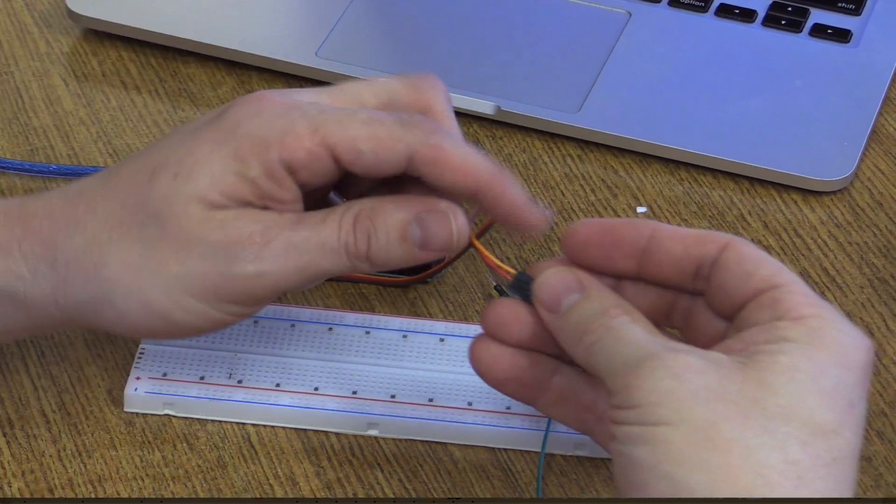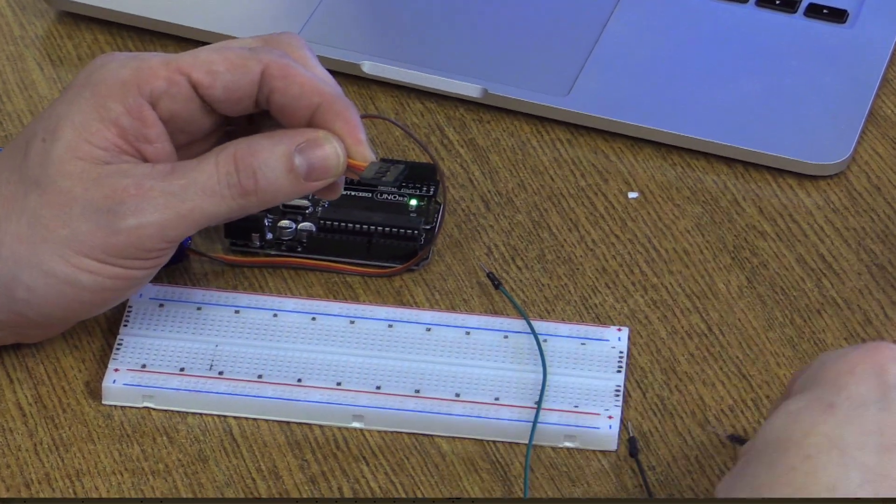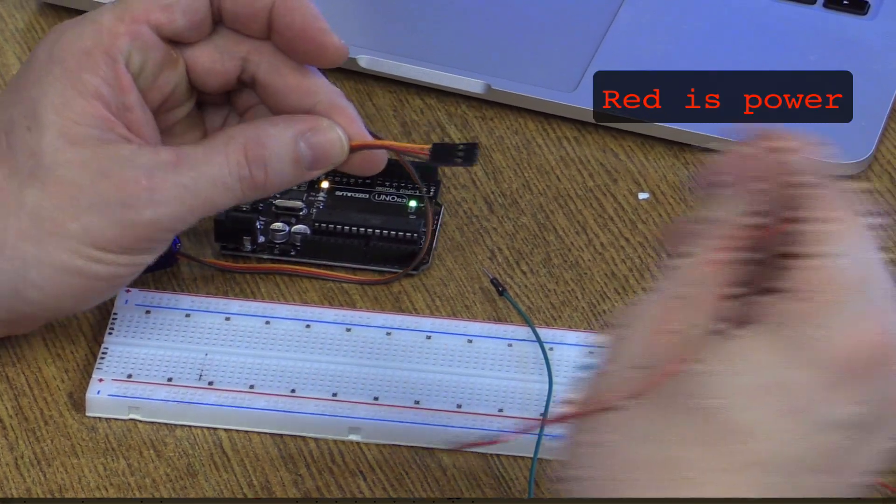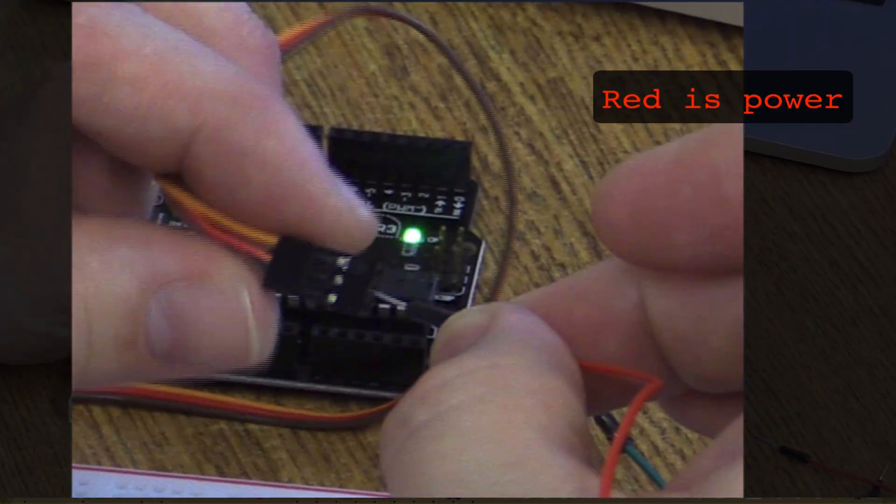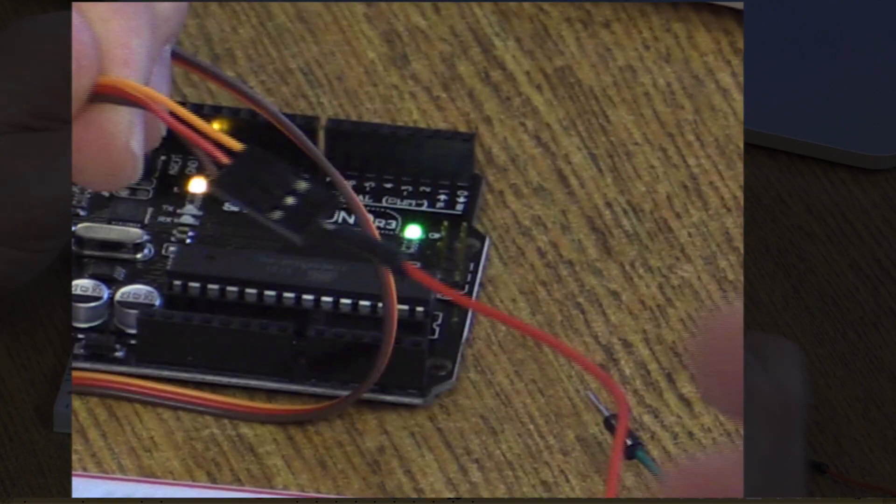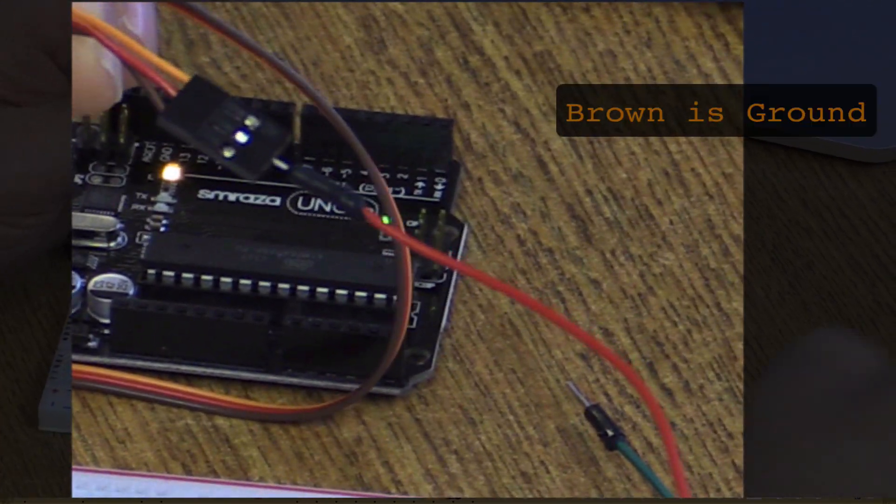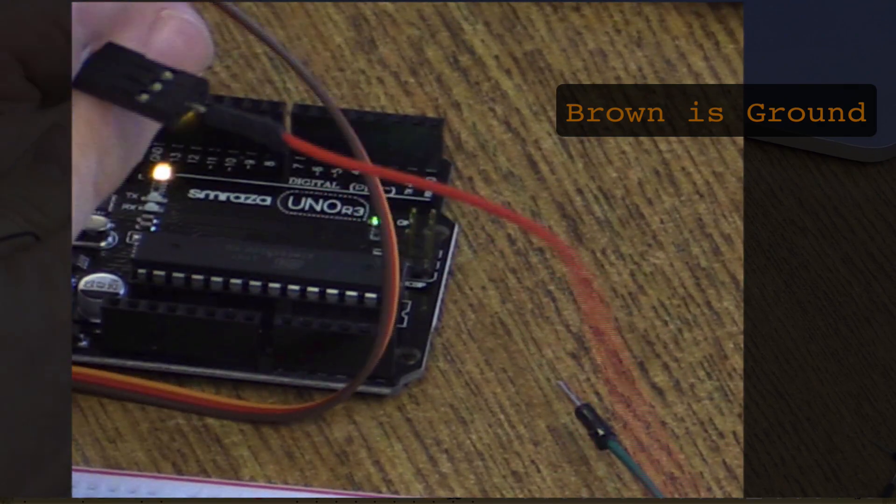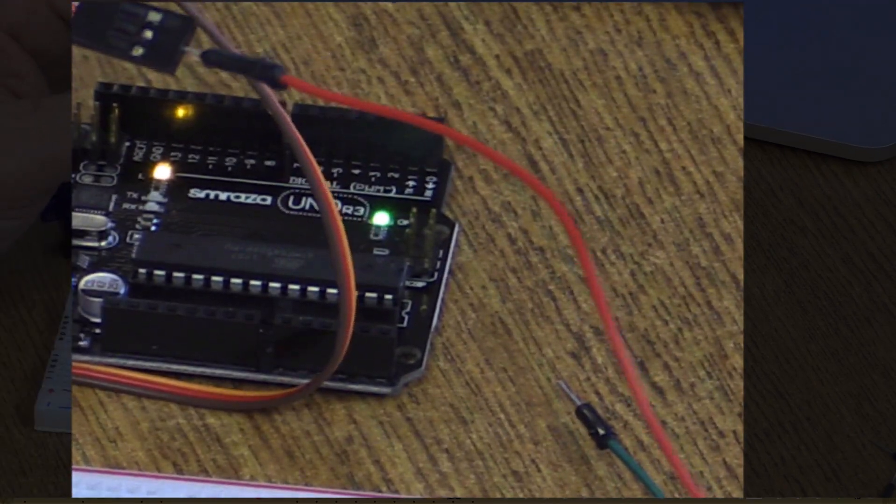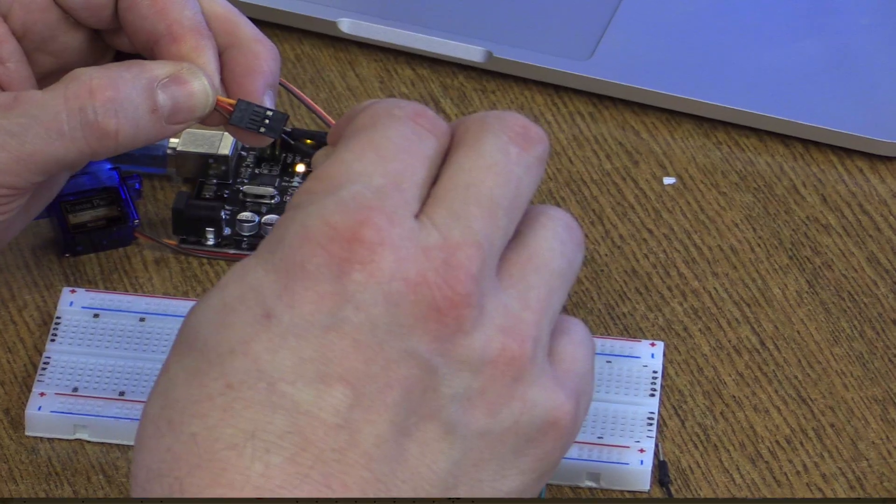So we're going to take a red wire and connect it to the place where the red comes out. So that's the middle one, red. In this case, brown happens to be the negative, the negative lead here. So we're going to go ahead and take a black one, connect it to negative.